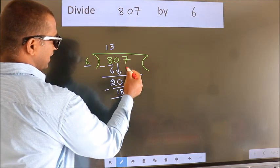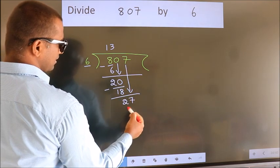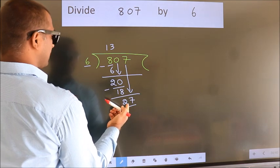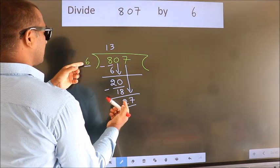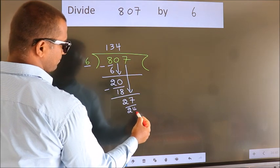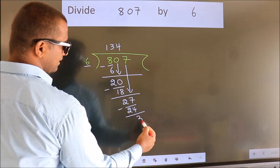After this, bring down the beside number. So 7 down. So 27. A number close to 27 in the 6 table is 6 fours: 24. Now we subtract. We get 3.